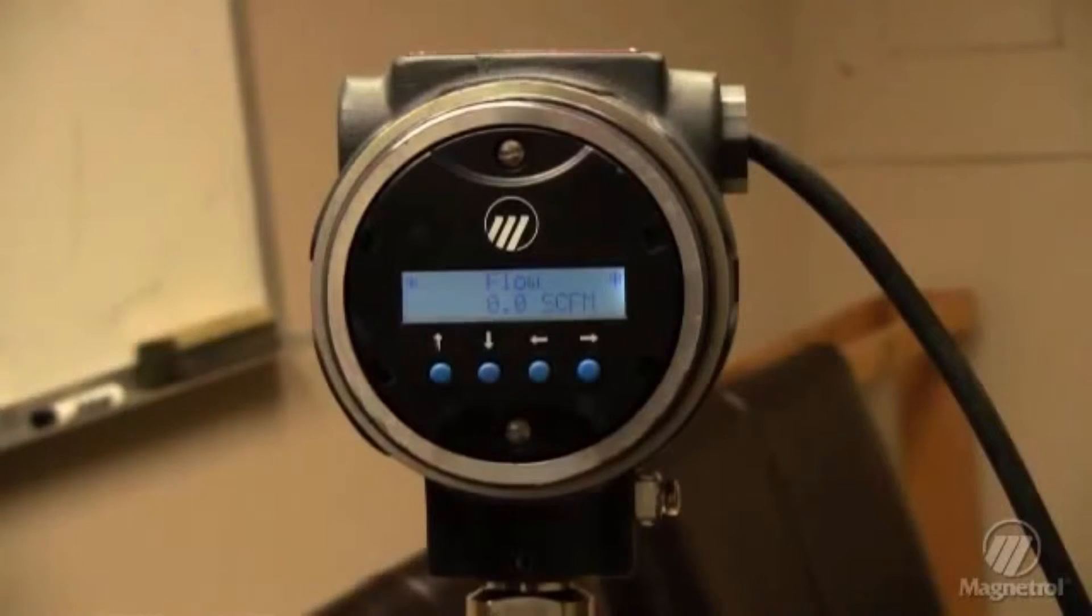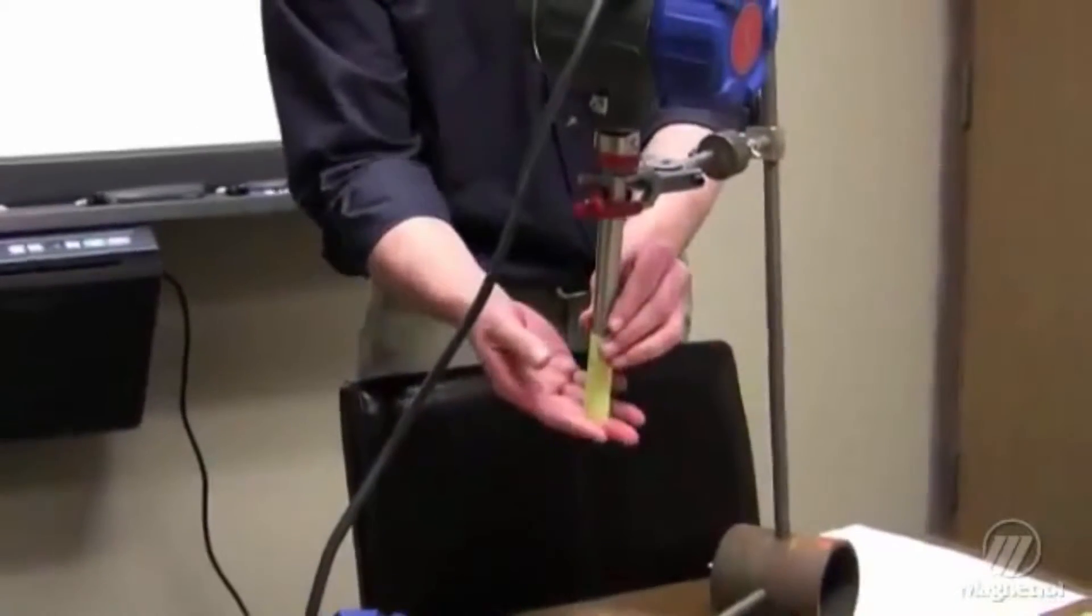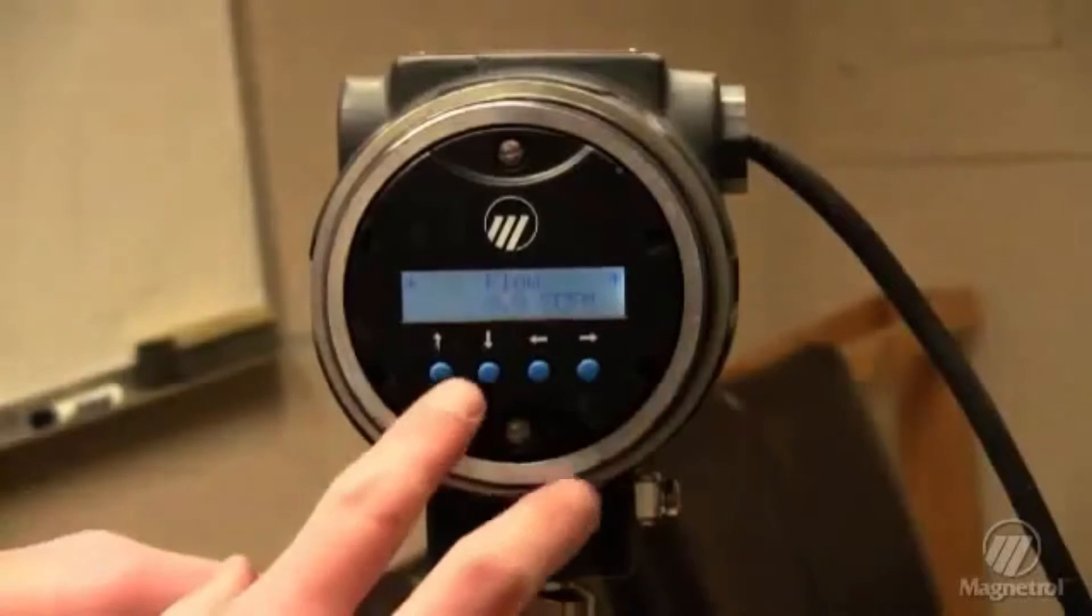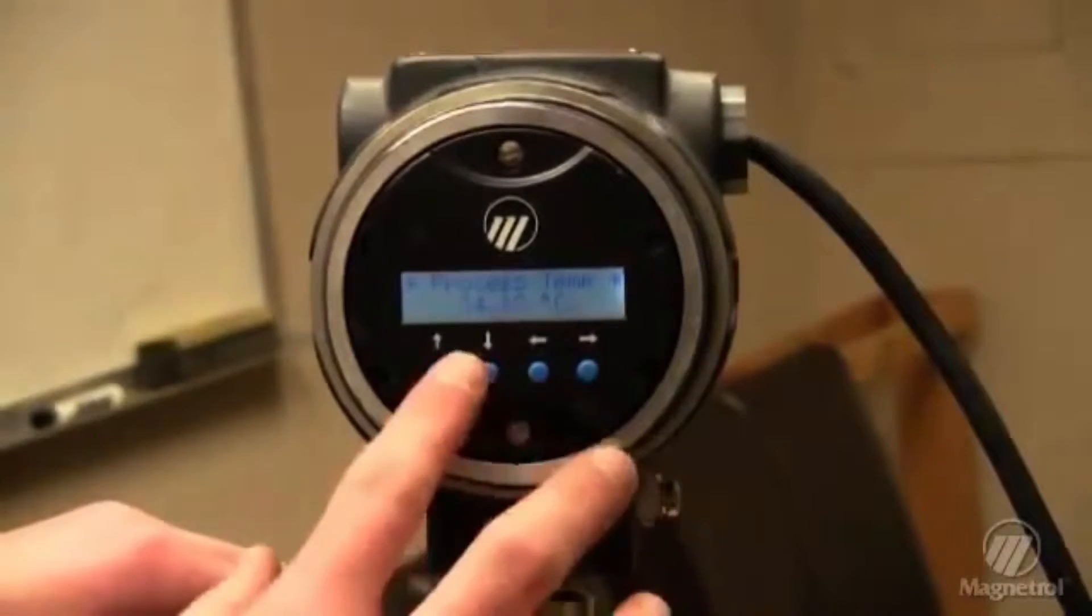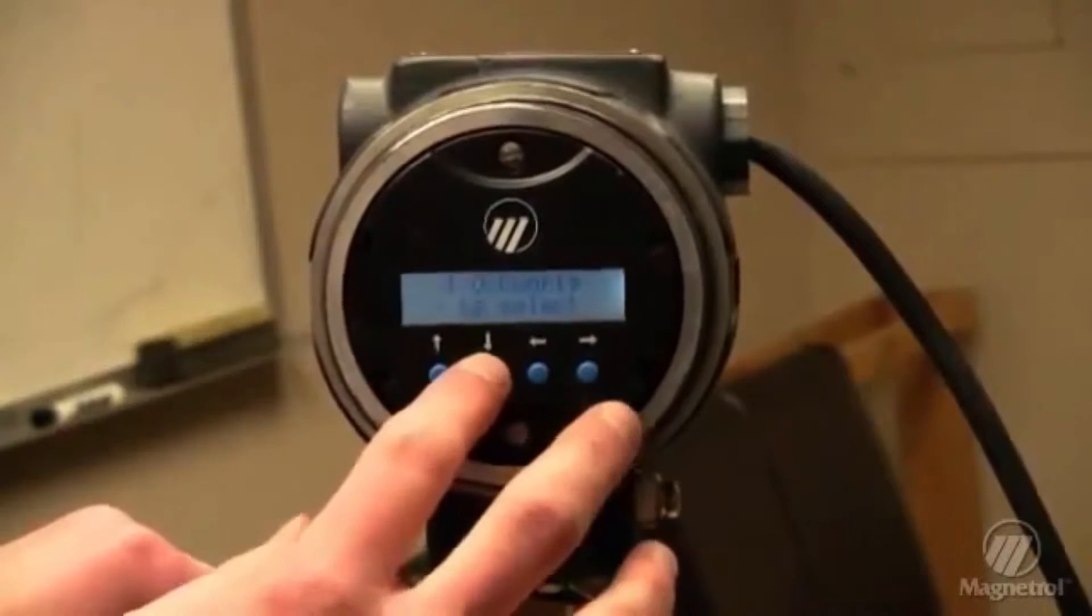To do this, wrap the sensor tip so no air flow can flow past the pins. From the display, you'll see the run mode. Press the down arrow and enter into the diagnostics section.